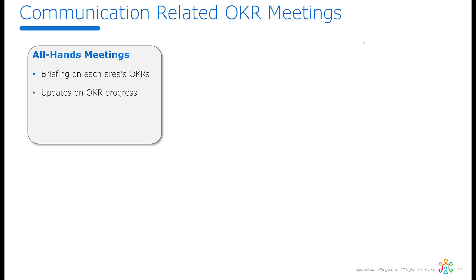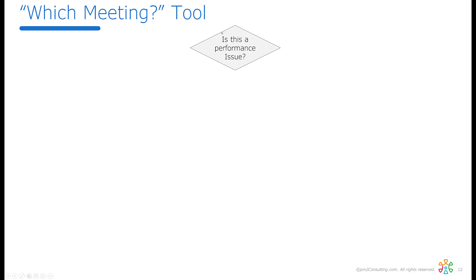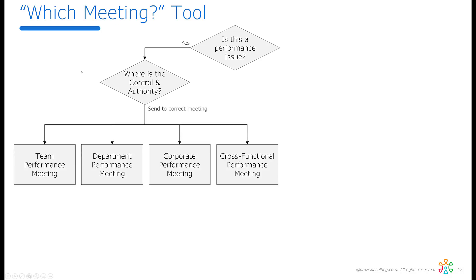This can seem like a complicated formula, so I've put together a flowchart. First, ask yourself: is what you're dealing with a performance issue? If yes, figure out where the control and authority lies to deal with that problem, then sort it into the right meeting. For example, if control and authority is at the team level, it goes in a team meeting; at the department level, it may be a departmental or cross-functional meeting.